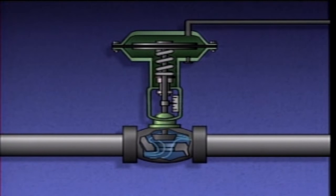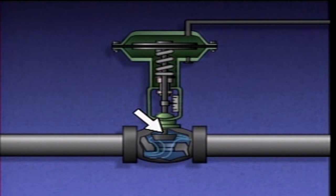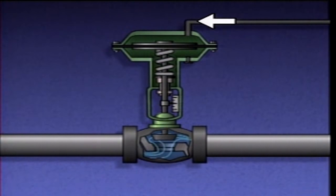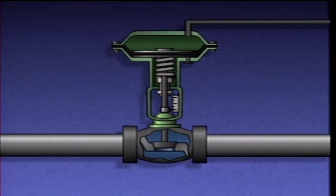The upper end of the actuator's stem is connected to the metal plates in the diaphragm, and the lower end moves the valve disc. When the actuator receives a signal from a controller to close the valve, air pressure is applied to the upper chamber, and the diaphragm and the actuator's stem are pushed downward.